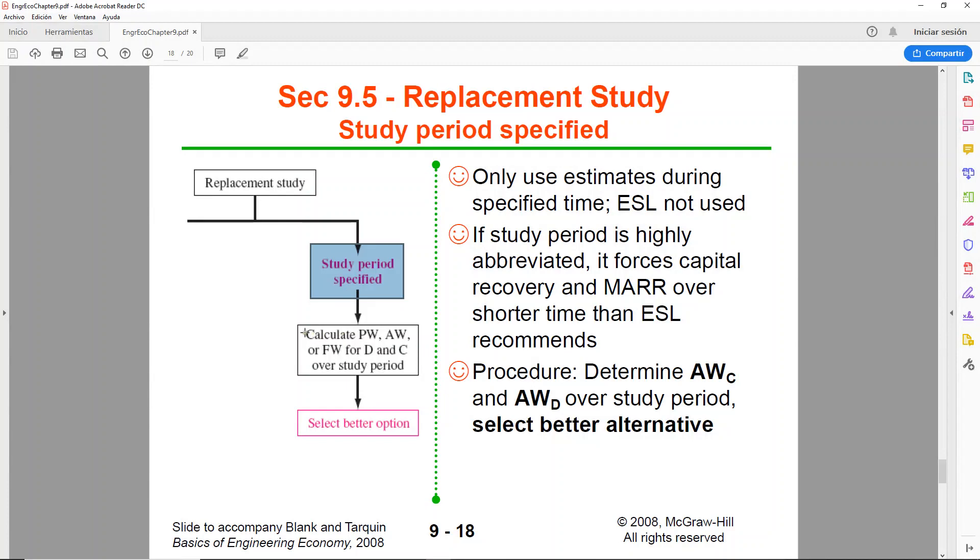In this case, we will calculate the annual worth for both the Defender and the Challenger over the study period only. In here, we will not be using the ESL, so that means that we're not going to be doing it for all the different case. We're just going to do it for the given study period.